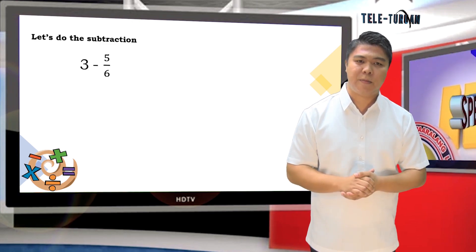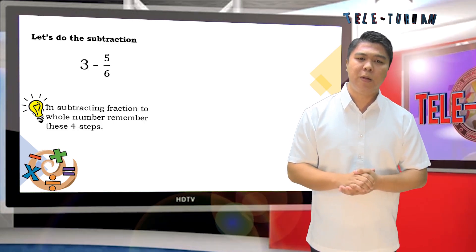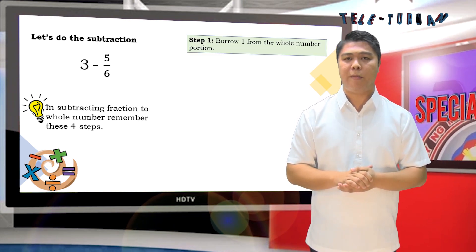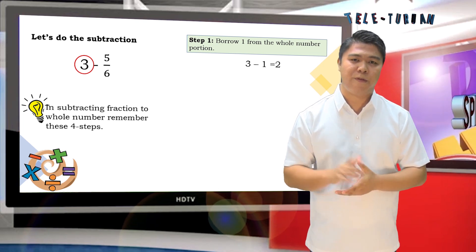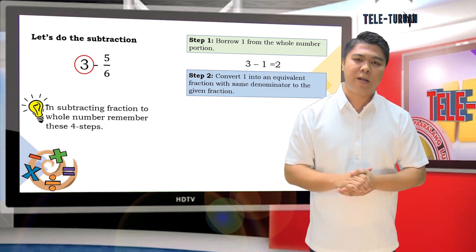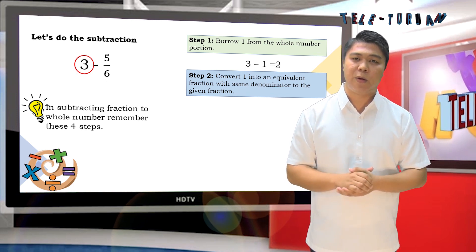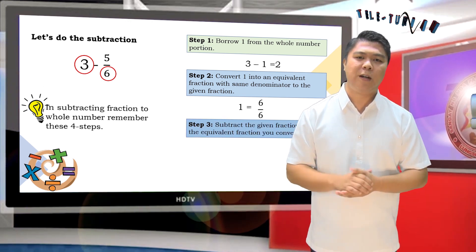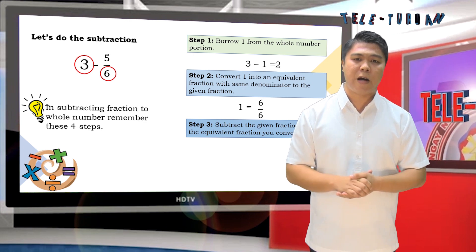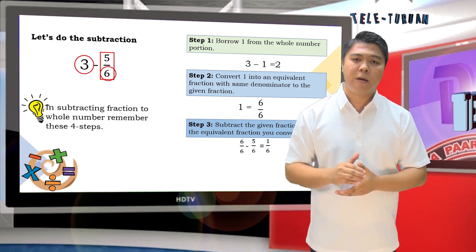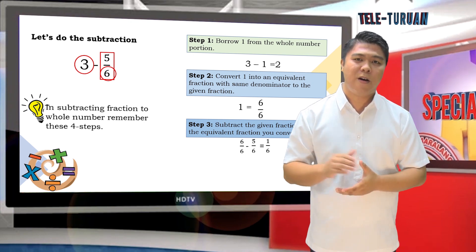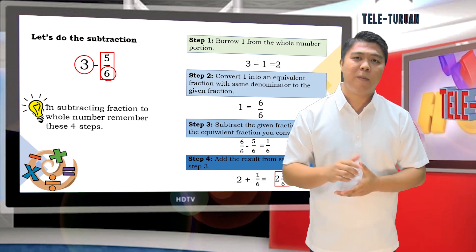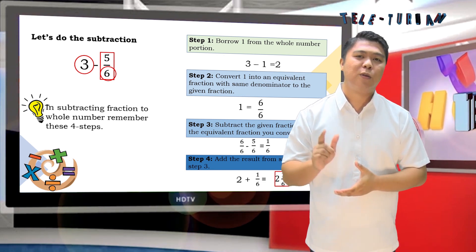Let's do the subtraction. In subtracting a fraction from a whole number, remember these four steps. Step 1: borrow 1 from the whole number. 3 minus 1 is 2. Step 2: convert 1 into an equivalent fraction with the same denominator as the given fraction. 1 is equal to 6/6. Step 3: subtract the given fraction from the equivalent fraction. 6/6 minus 5/6 is 1/6. Step 4: add the results from Step 1 and Step 3. 2 plus 1/6 is 2 and 1/6.